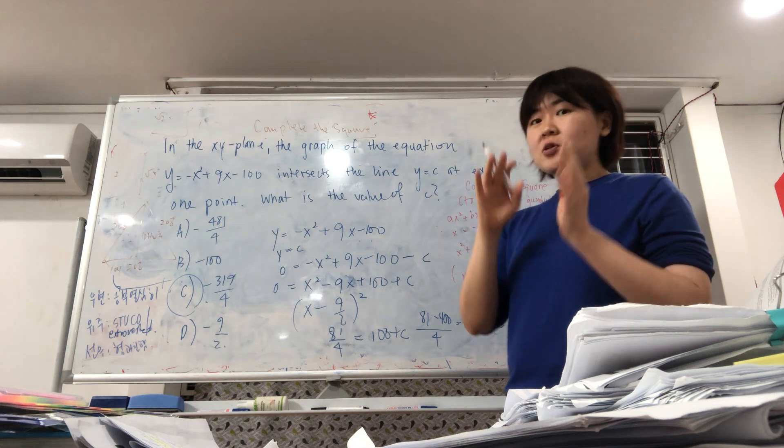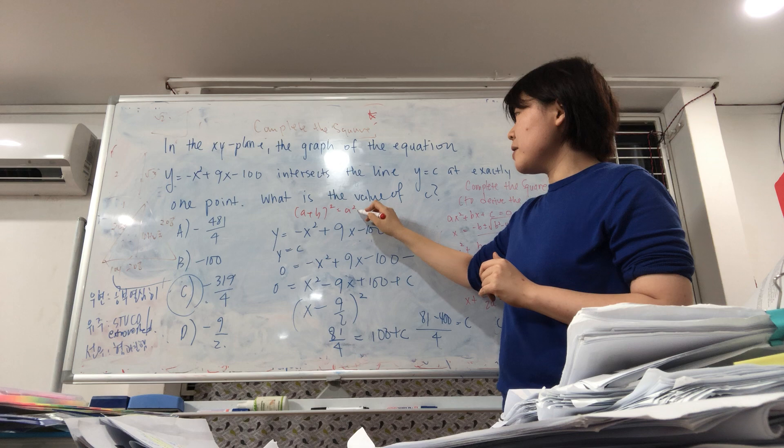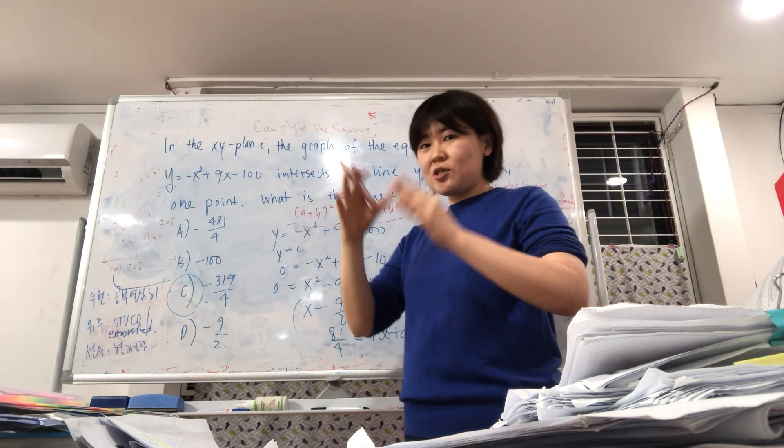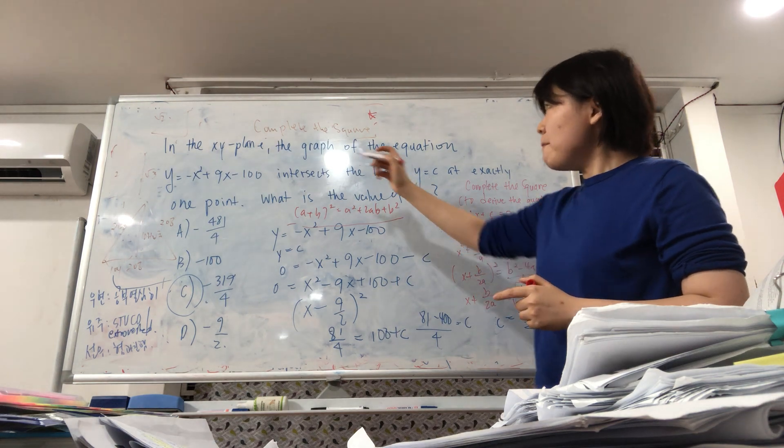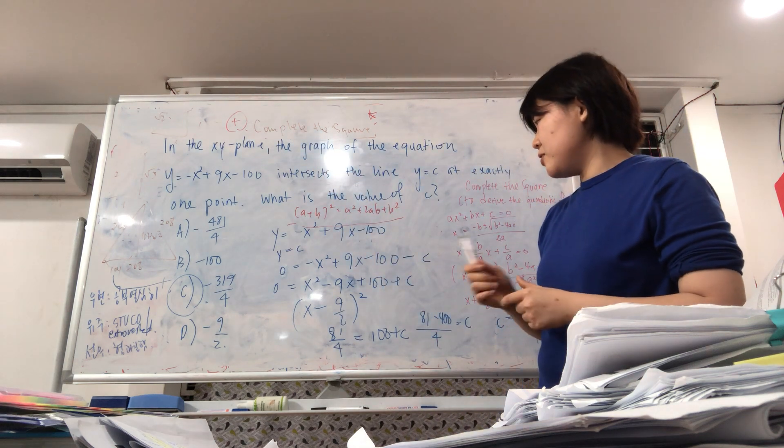So we're looking at factorization. A plus B square equals A squared plus 2AB plus B squared. Factorization that we were able to go through. And complete the square is an additional concept that we'll be going over, that we would have went over.